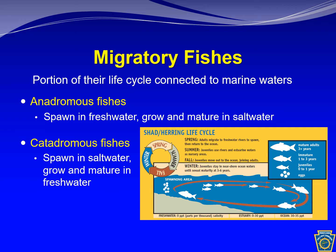Striped bass are also anadromous fishes. Opposite of anadromy is catadromy. Catadromous fishes spawn in the saltwater of the Atlantic Ocean but grow and mature in freshwater of inland waters. An example of this is the American eel.